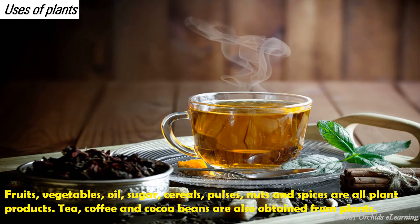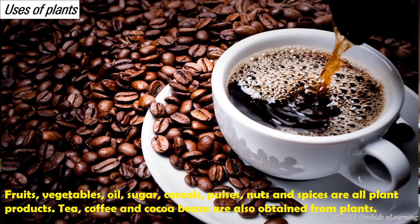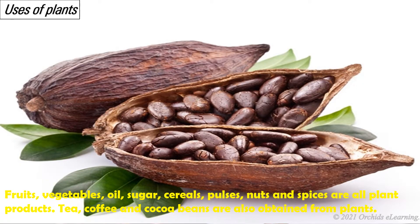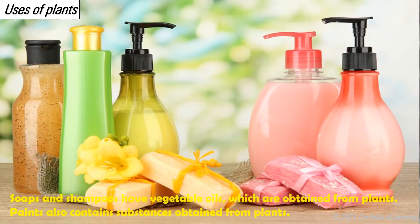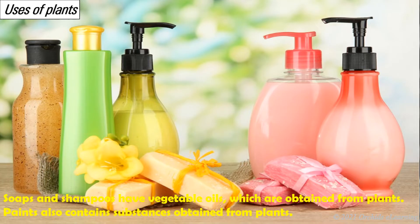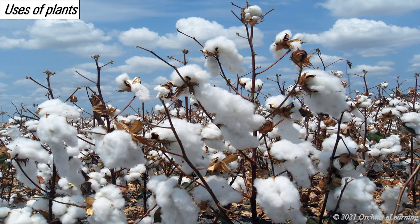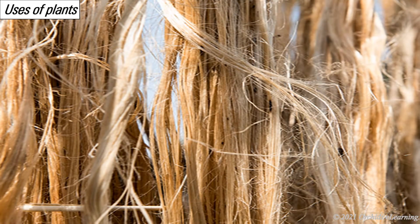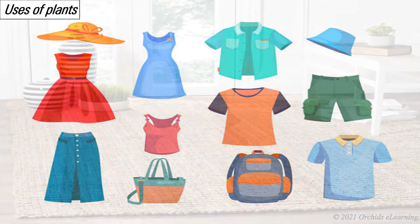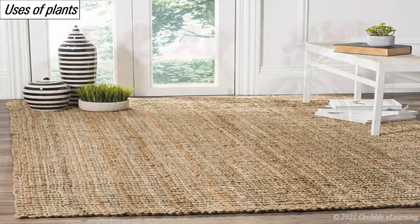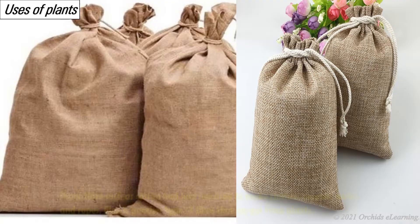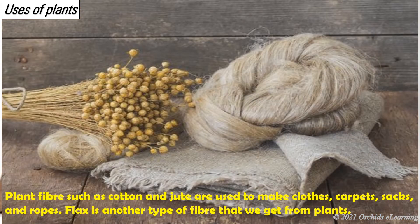Tea, coffee, and cocoa beans are also obtained from plants. Soaps and shampoos have vegetable oils which are obtained from plants. Paints also contain substances obtained from plants. Plant fiber such as cotton and jute are used to make clothes, carpets, sacks, and ropes. Flax is another type of fiber that we get from plants.